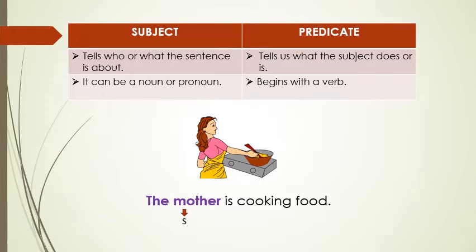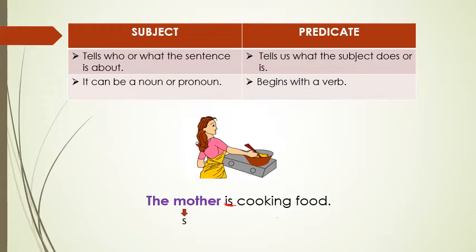Now let's see which part is called a predicate: 'is cooking food.' If I ask what the subject — that is, the mother — is doing in the picture, we can clearly say that the mother is cooking food. We know that a predicate generally begins with a verb. The verb here is 'is'. So 'is cooking food' is the predicate in this sentence.